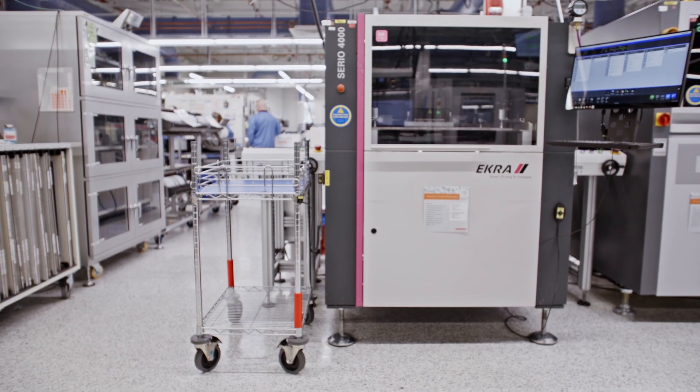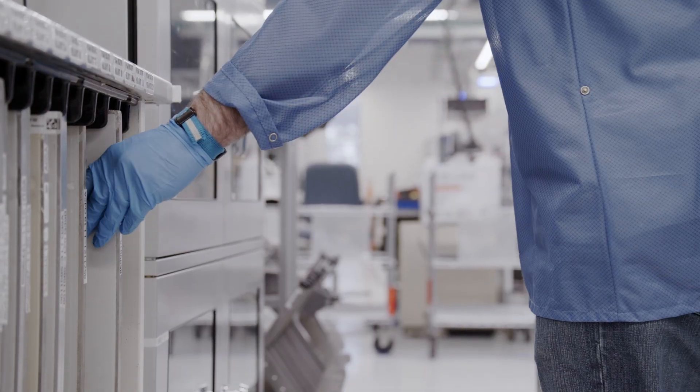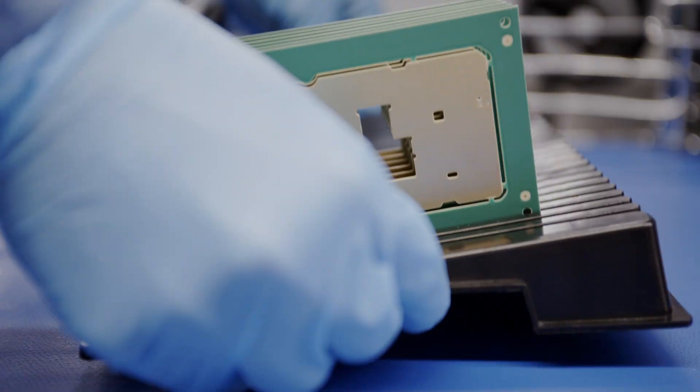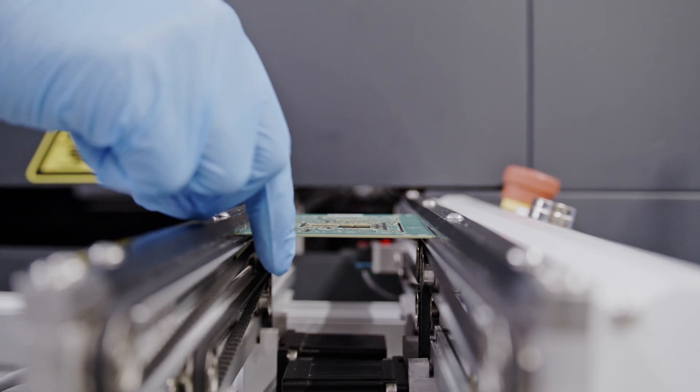From there, we move to the ECRA screen printer, where a thin layer of solder paste is applied to the board using a laser-cut stencil. Think of it like preparing a canvas for a masterpiece.